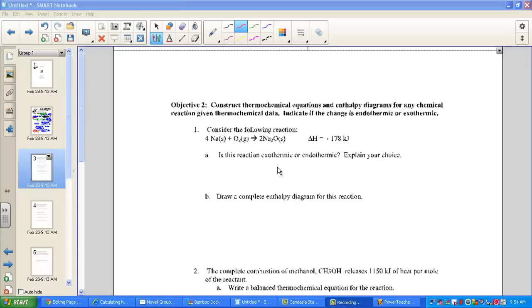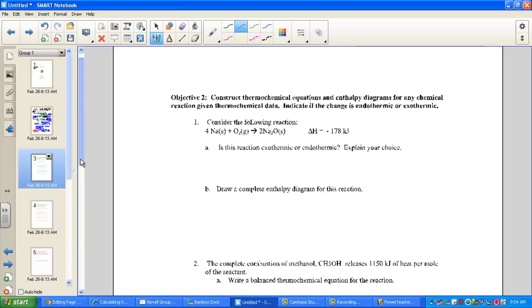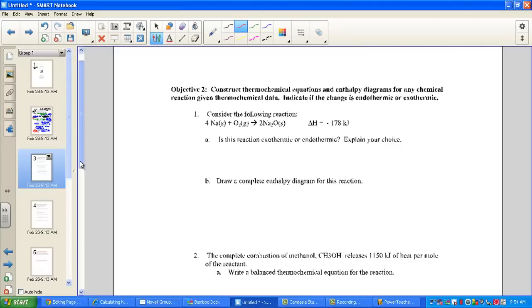This lesson will talk about objective 2 from our practice test B. We're being asked to construct thermochemical equations and enthalpy diagrams for chemical reactions. We want to indicate if the change is endothermic by noting the positive sign for heat being absorbed, or exothermic, knowing that if it's releasing heat, delta H will come out negative.